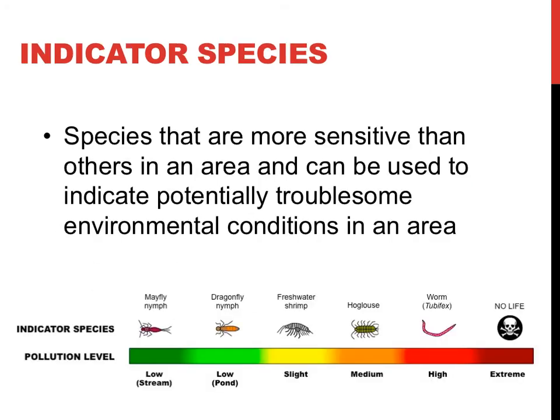With all the different factors that can affect the environment, it is important to have an idea of how impacted an environment really is at a given time. Some organisms are more sensitive to change than others. By using what are called indicator species — those species that have different known levels of tolerance to change — ecologists can evaluate how the ecosystem as a whole is affected by some change. If all the worms in a population were to start dying off, for example, the demise of this indicator species would indicate very high levels of pollution in the ecosystem.